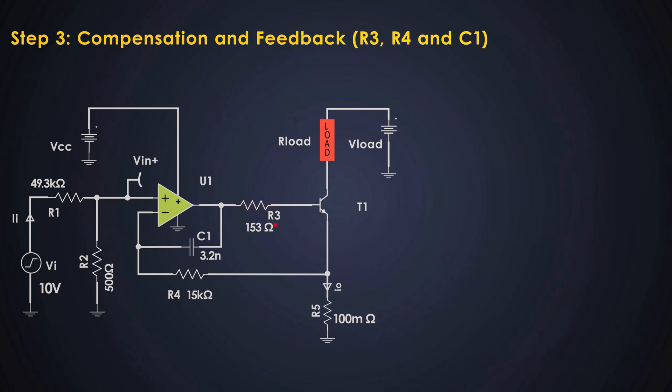These three components, R3, R4, and C1, are not just decorative add-ons. They form a frequency compensated feedback path tailored for power stage dynamics. Without them, this BJT based current source could become unstable, especially with fast changing loads or longer wire inductance.